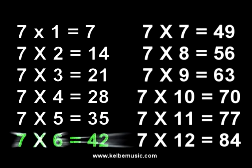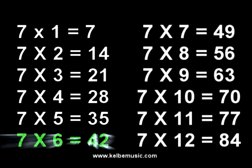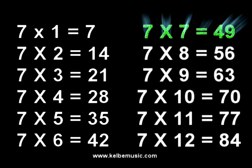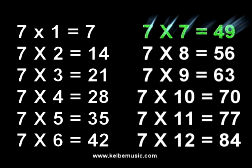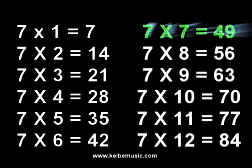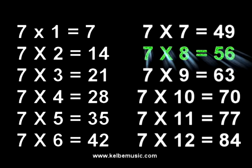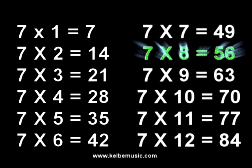Seven times five is thirty-five. Seven times six is forty-two. Seven times seven is forty-nine, forty-nine.